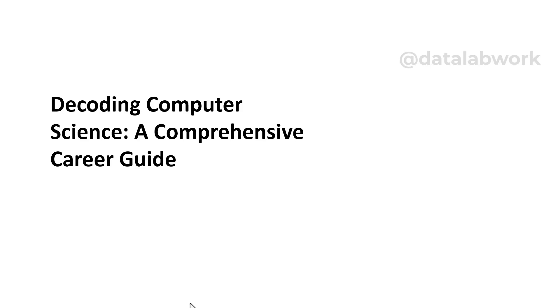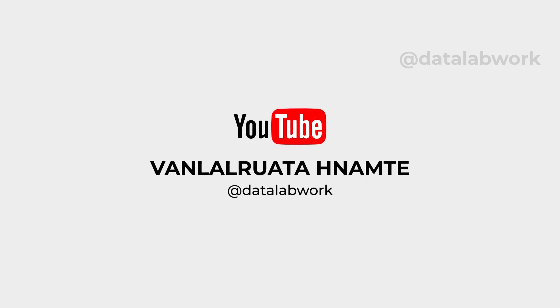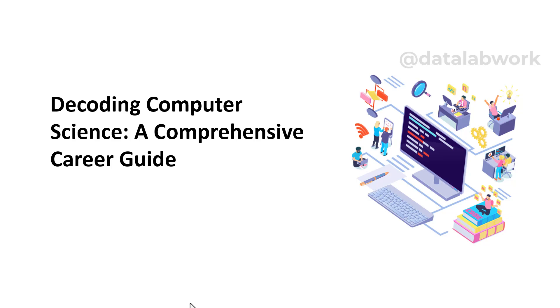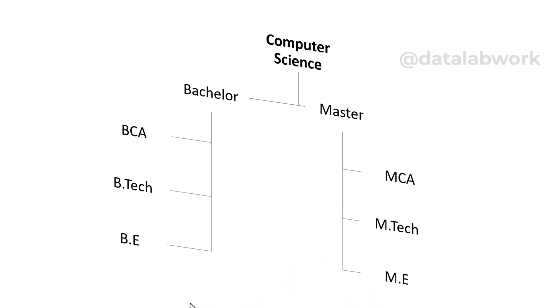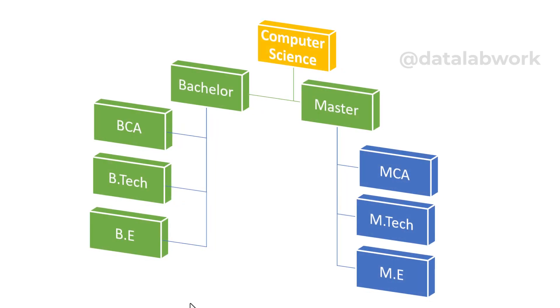Are you finding it challenging to decide on the right computer science course for your career? Today we are going to discuss these challenges. Welcome to the Data Lab Work channel. The world of computer science is vast and varied, offering a myriad of courses each with its unique opportunities and challenges. You've got the Bachelor of Computer Applications (BCA), Bachelor of Technology in Computer Science Engineering (BTech CSE), and the Bachelor of Engineering in Computer Science (BE CSE). Then at the master's level, there's MCA, MTech CSE, and ME CSE. It's no wonder that choosing the right path can seem daunting.